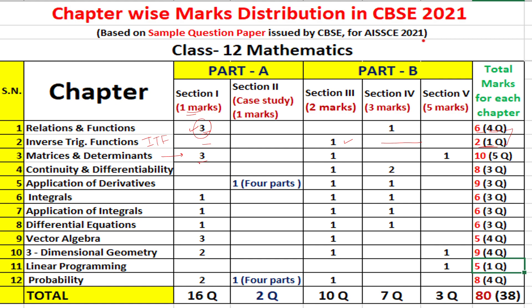In Matrices and Determinants, there are three questions of 1 mark each, one question of 2 marks, and one question of 5 marks — based only on solving equations. Five questions carrying 10 marks will be asked from this unit. Note that all determinant property-based questions have been removed.